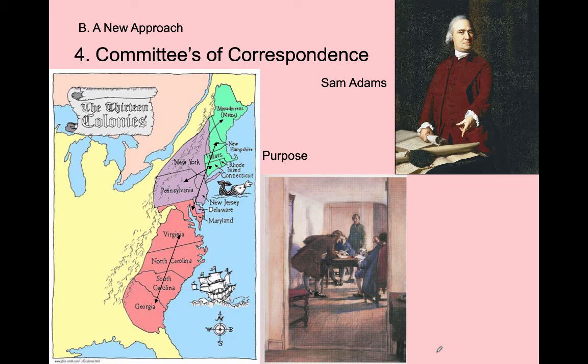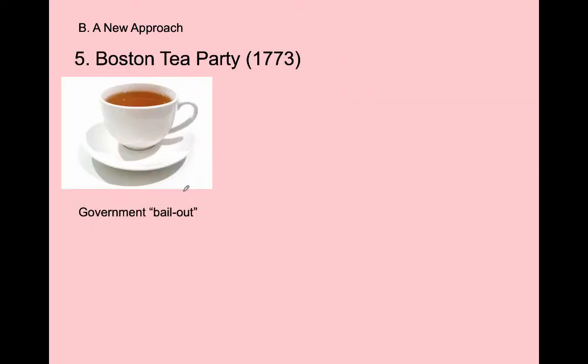Sam Adams, a brewer and political leader, is one of the Sons of Liberty's leaders—a great example of the middle class artisans and lower class workers that formed the group. He wants to keep the anger about British taxes and the massacre going across all colonies, not just Massachusetts. So he creates the Committees of Correspondence: groups of patriot men in colonies up and down the Atlantic coast who write letters back and forth about the latest things England is doing—keeping people in all colonies informed and angry, stirring the pot as they wait for the next clash.